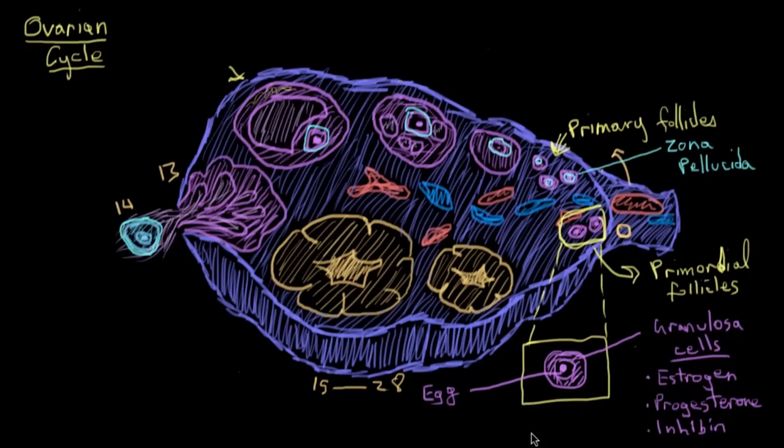Now even though the zona pellucida is there, separating the granulosa cells from the actual egg, the granulosa cells can still nourish the egg through gap junctions that go through the zona pellucida and into the egg. Gap junctions are just little passageways from one cell to another cell where they can exchange nutrients or other signals. And actually, through those gap junctions, the granulosa cells send through little chemicals that keep those primary oocytes stuck at that meiosis I stage. Because at this point, all of these primary oocytes are stuck in meiotic arrest. They're not dividing and reducing their chromosome copy number.